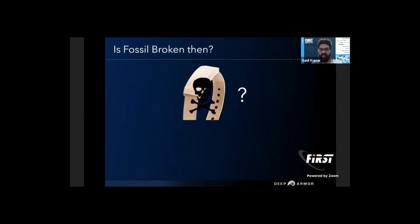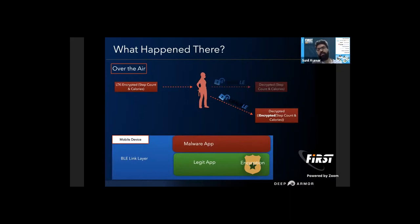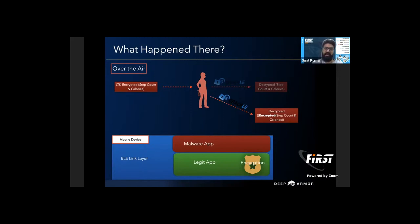We have seen that LTK can be cracked and malware applications can read BLE data — does this mean the Fossil device is broken? The answer is no. Fossil uses one more extra layer of protection: application-level encryption. During the initial stages, the Fossil device and the Fossil application exchange an application-level secret. This secret is used to encrypt all data exchanged between the device and the application. So if someone over-the-air uses Crackle and cracks the LTK, they will end up with data still encrypted by the application secret. Similarly, a malware application reading the unencrypted BLE data will also see application-encrypted data. This is the recommended way to implement BLE security in wearable devices.